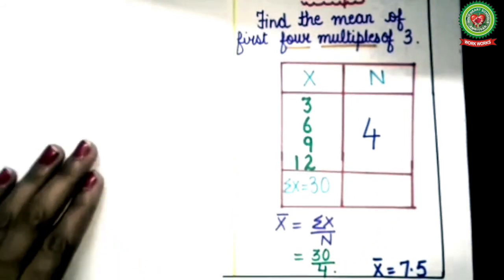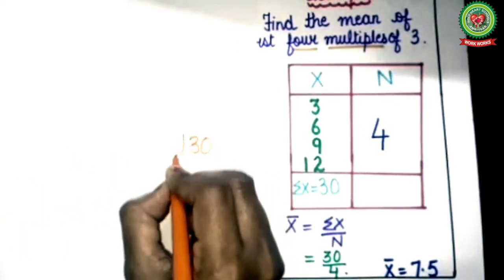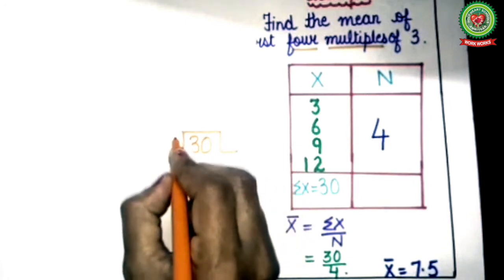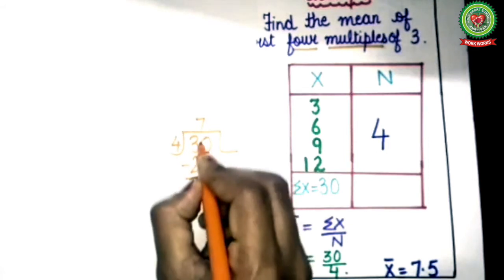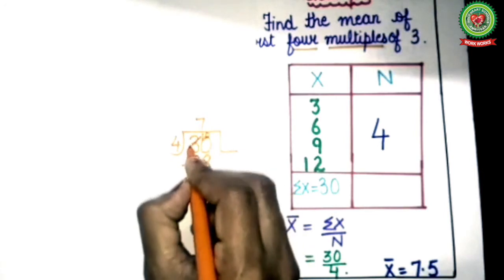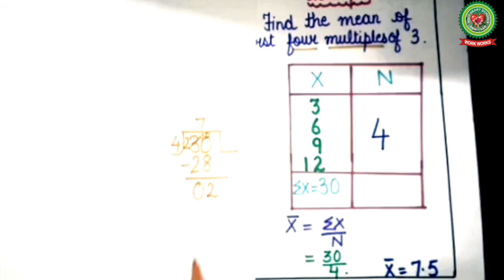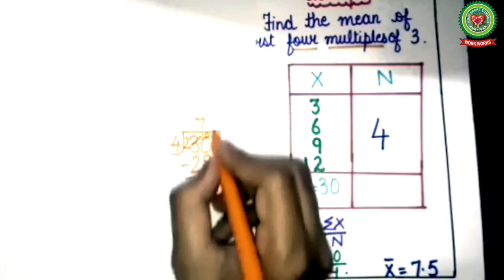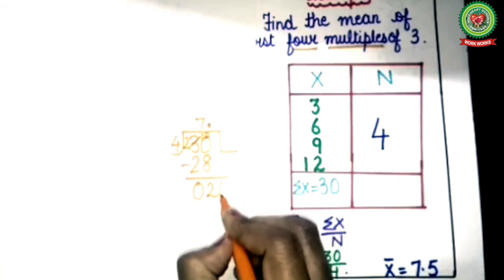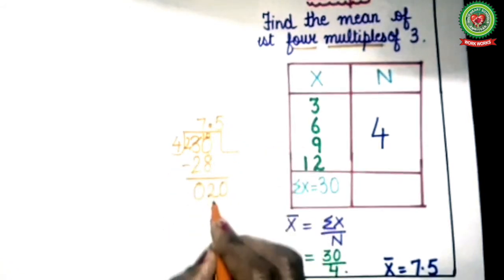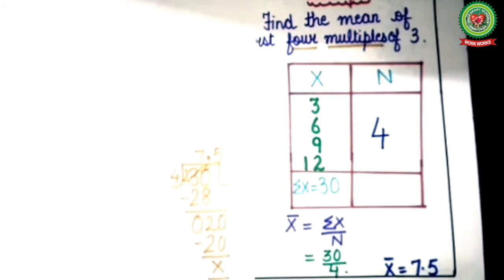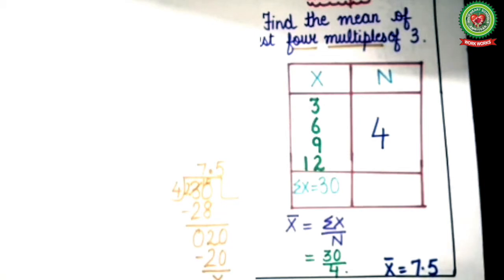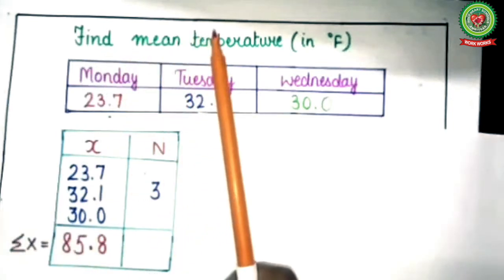Apply the formula: x̄ = Σx upon n. The value of Σx is 30 and value of n is 4. Divide 30 by 4. After dividing you get x̄ = 7.5. Now let's see one more question where we have to find the mean temperature in degrees Fahrenheit.